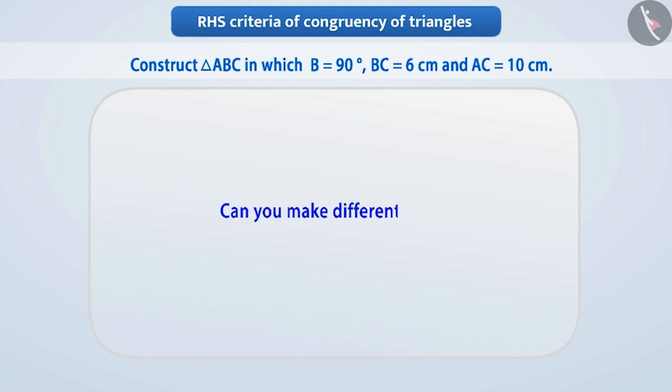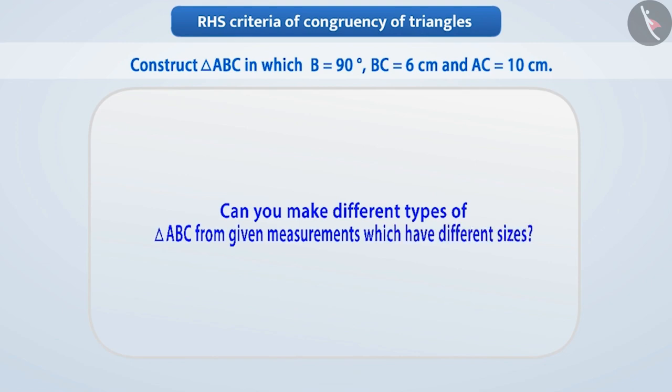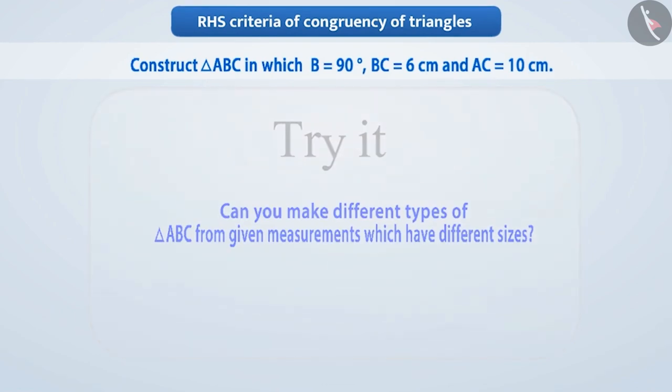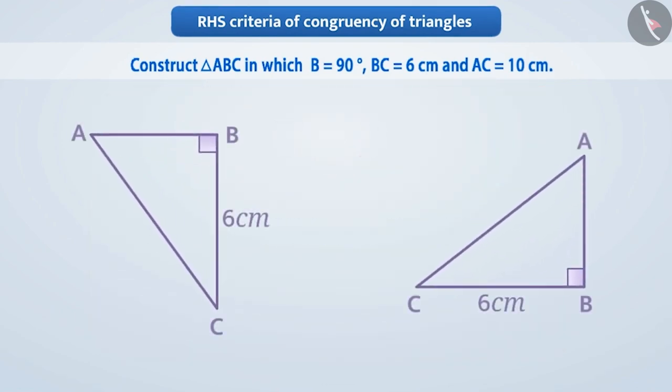Can you make different types of triangle ABC from given measurements of different sizes? Try pausing the video. You will get equal sized triangles in each case. That is, you will get congruent triangles.